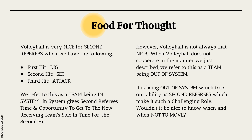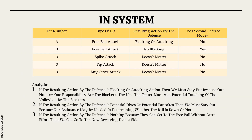However, volleyball is not always that nice. When volleyball does not cooperate in the manner just described, we refer to this as a team being out of system — which tests our ability as second referees and makes it such a challenging role. Wouldn't it be nice to know when and when not to move? If the offense is on hit number three for any type of attack and the resulting action involves blocking, notice that the second referee never ever moves — except if we have a free ball attack resulting in no blocking.